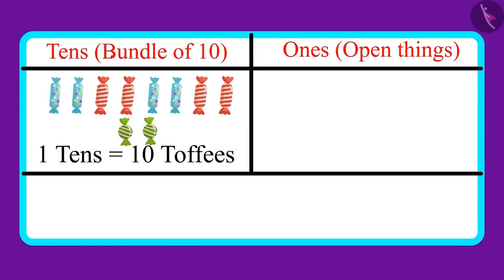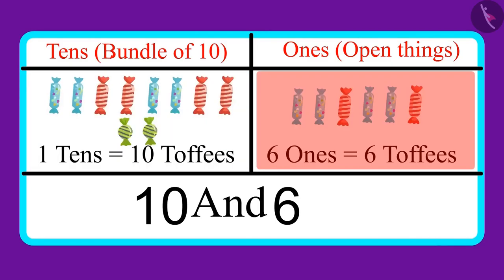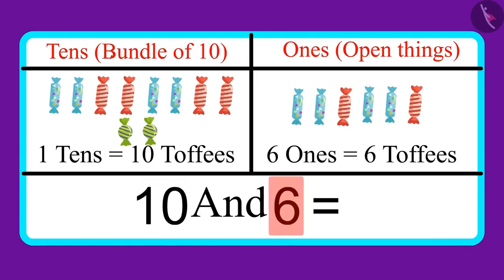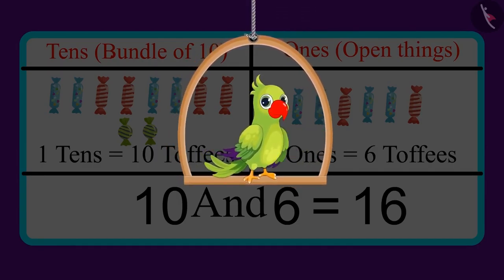These are some toffees. There are one tens and six ones in the number. Can you tell me how many toffees are there in all? One tens means ten toffees, and six ones means six toffees, which means these are sixteen toffees. Your answer was also the same, right? Very good.